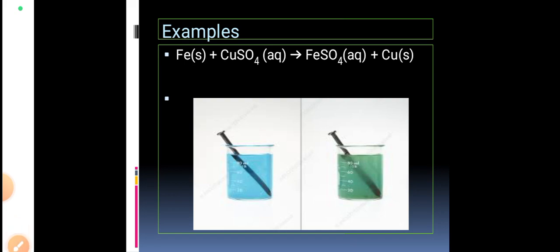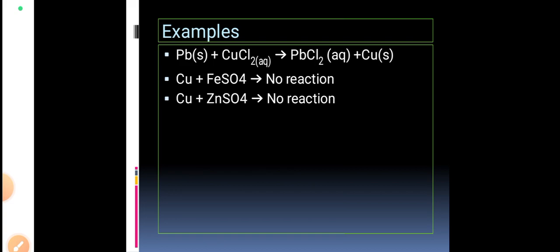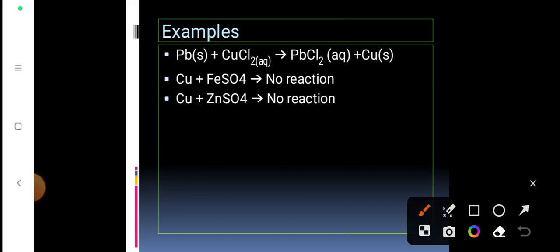Here are some examples where reaction does not take place. Copper reacting with iron sulfate and copper reacting with zinc sulfate — in both cases, copper is less reactive than iron and less reactive than zinc. Therefore, copper cannot displace iron from iron sulfate, and copper cannot displace zinc from zinc sulfate. Hence, no reaction occurs in either case.